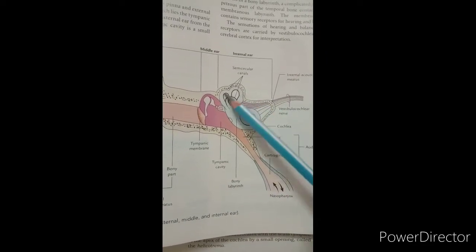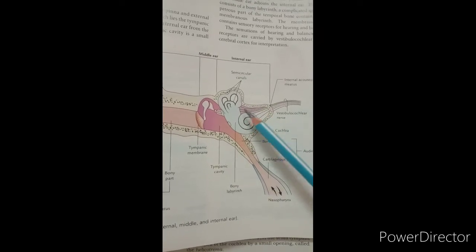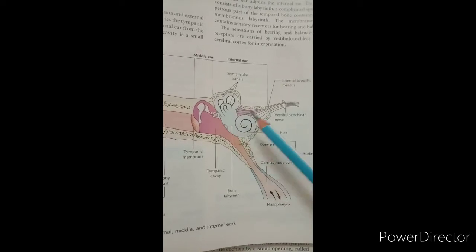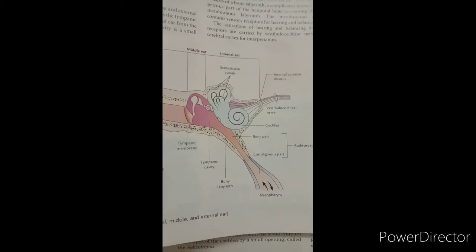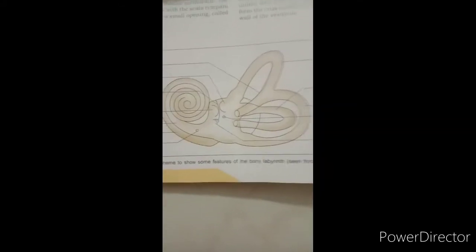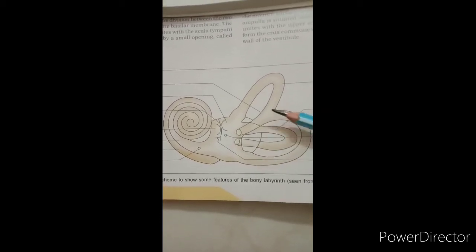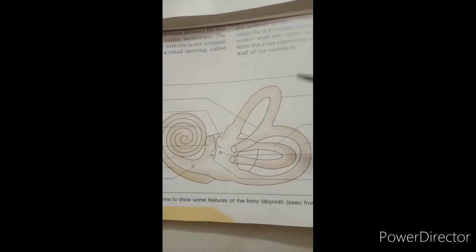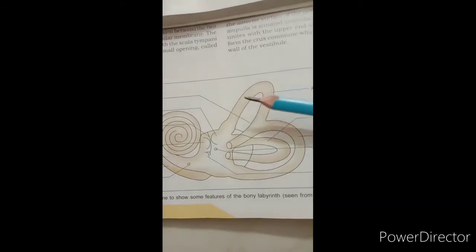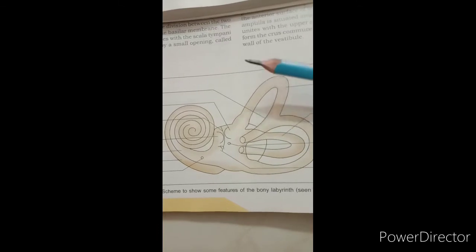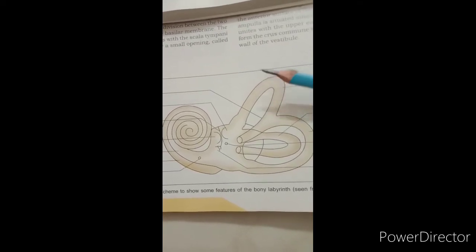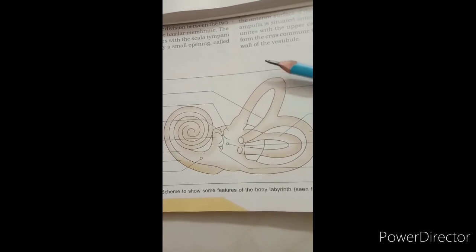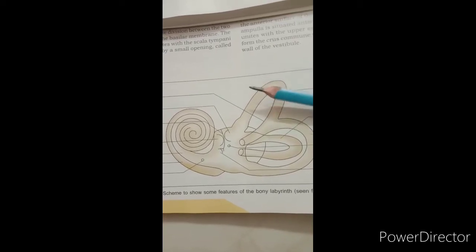The internal ear, also called the labyrinth, is made of two components: the outer part called the bony labyrinth and the inner part called the membranous labyrinth. The fluid filled into the membranous labyrinth is called endolymph, and the membranous labyrinth lies within complex intercommunicating bony cavities and canals called the bony labyrinth in the petrous part of the temporal bone. The space between the membranous and bony labyrinth is filled with fluid called perilymph. The sensory receptors within the membranous labyrinth are responsible for hearing and balance or equilibrium of the body.